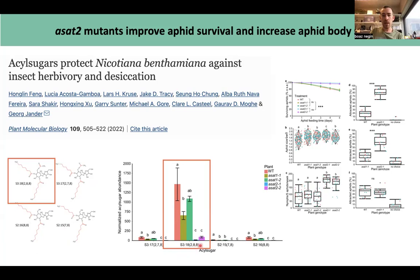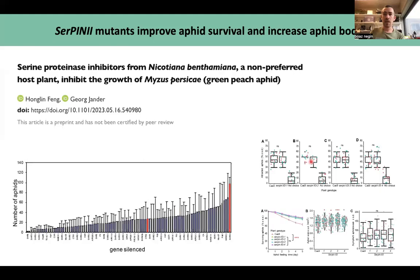When he knocked out ASEP2, he basically got almost no acyl sugars in Benthamiana. He saw that this really affects aphid survival, aphid size, aphid reproduction, and in choice assays, aphids prefer to be on the acyl sugar mutants.